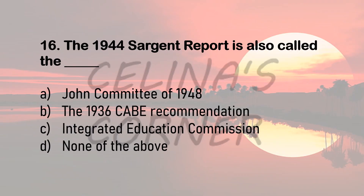Question 16. The 1944 Sargent Report is also called the dash. Option A: Joint Committee 1948. Option B: the 1936 CABE Recommendation. Option C: Integrated Education Commission. Or option D: none of the above. The correct answer is option B, the 1936 CABE recommendation.